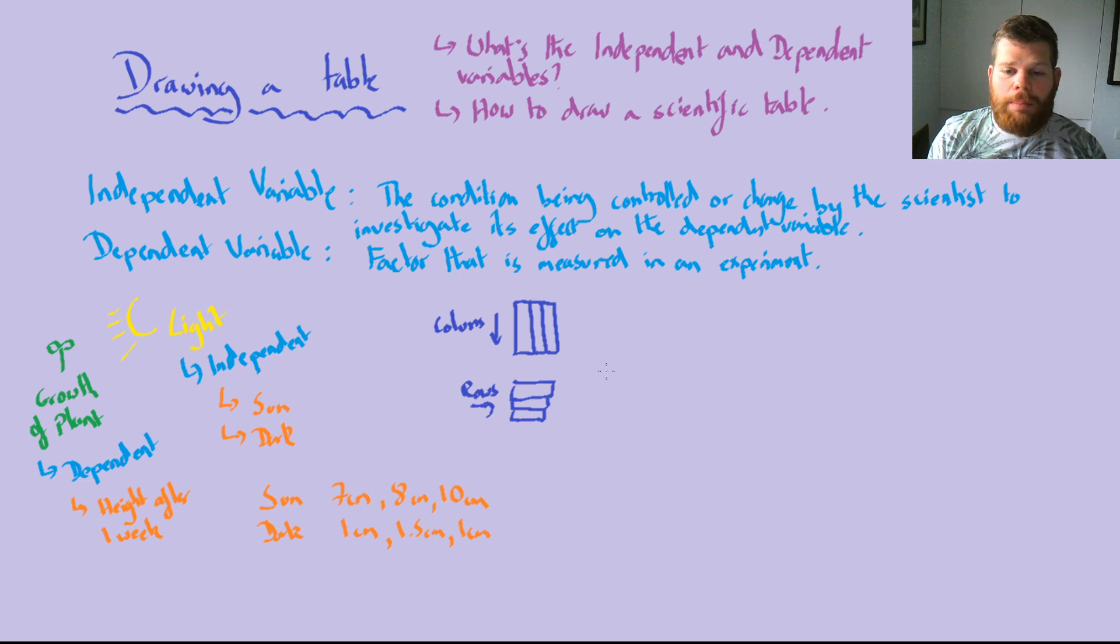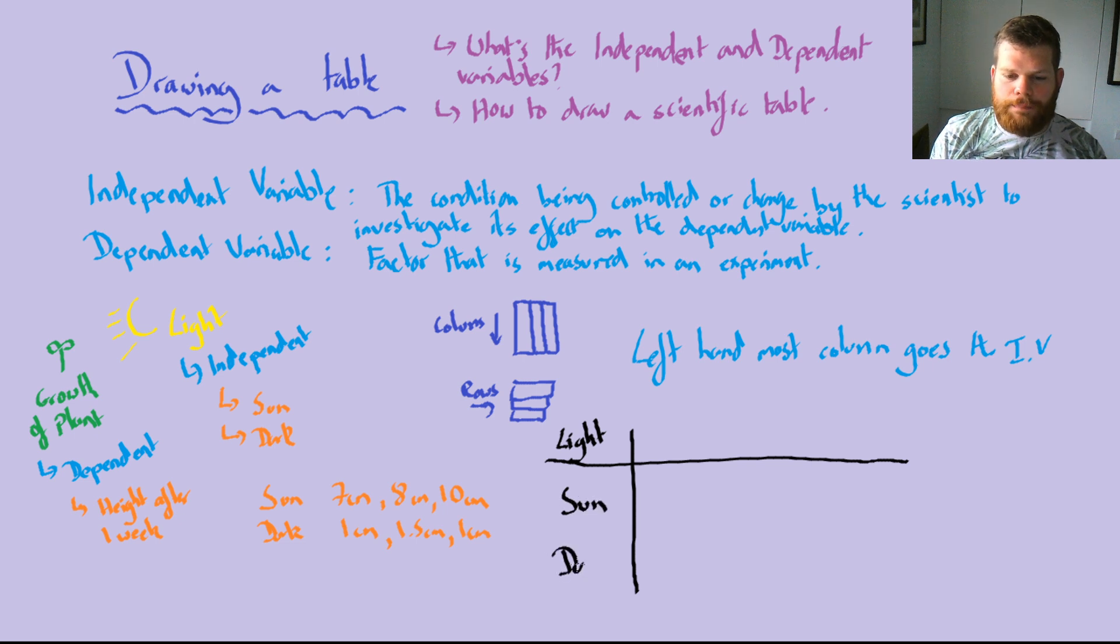First off, we know that the light is our independent variable. So when we draw our column, in the left-hand most column goes the independent variable. So if I draw out my table like so, I've got the sun and then I've got the dark. Now, each of these get their own row.